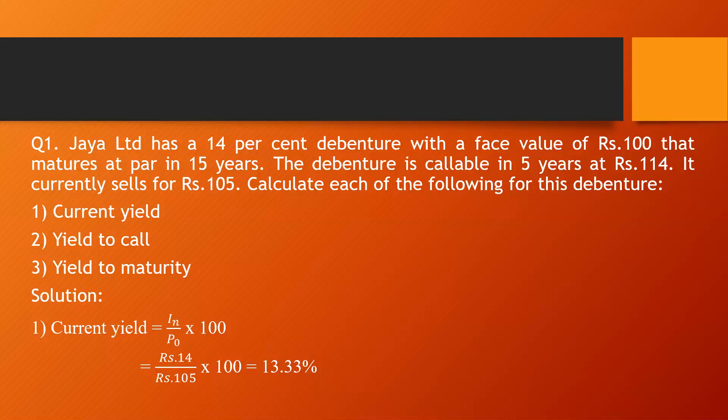The formula for current yield is interest divided by current market price multiplied by 100. The interest is 14% of 100, giving rupees 14. Divided by the current market price of 105, multiplied by 100, gives 13.33%. The bond is giving a return less than the coupon rate, meaning the actual return from the bond is less than the coupon rate. In such a case the bond would need to be offered at a discounted rate to attract buyers.